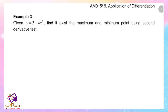Example 3. Given y equals 3 minus 4x cubed, find if there exist maximum and minimum points using the second order derivative test. Differentiate the curve: dy/dx equals negative 12x squared.